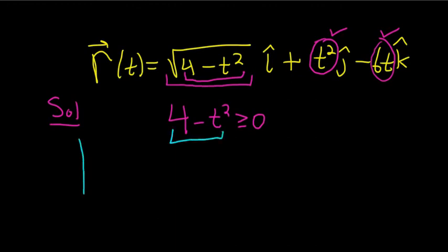This is an upside-down parabola. You can think of it like negative t squared plus 4, and it's shifted up by 4. One, two, three, four. And it looks like that.